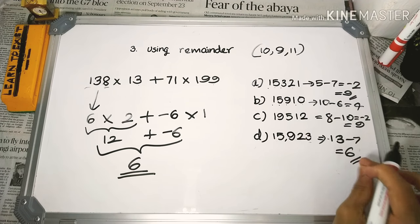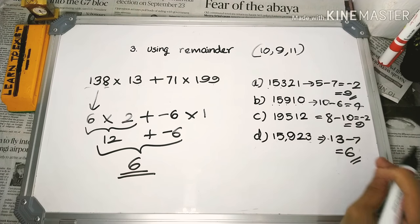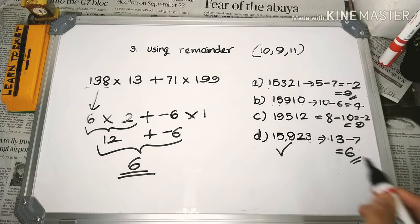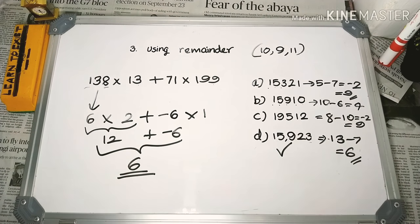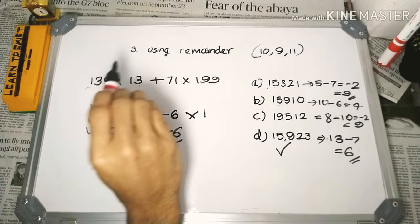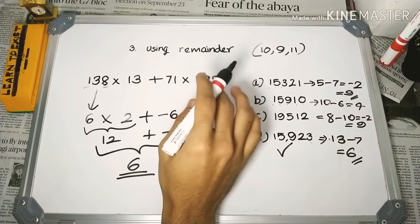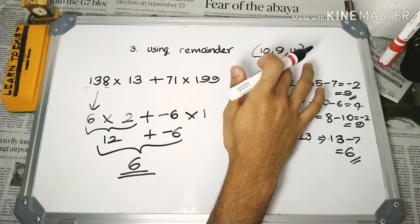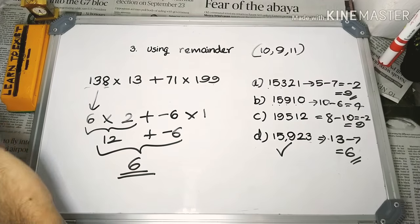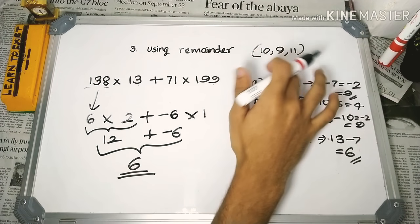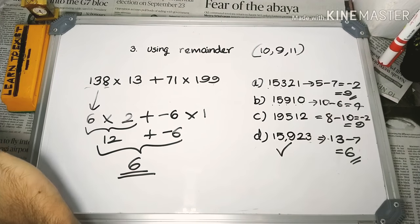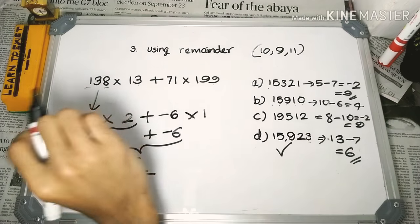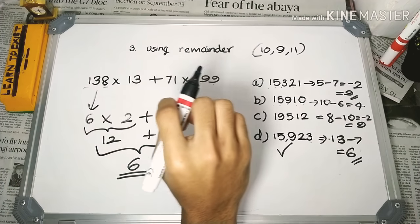We will check option D. We will check these numbers — 10, 9, 11 — and verify 3 numbers using this method. I will discuss more in the next video. Thank you.